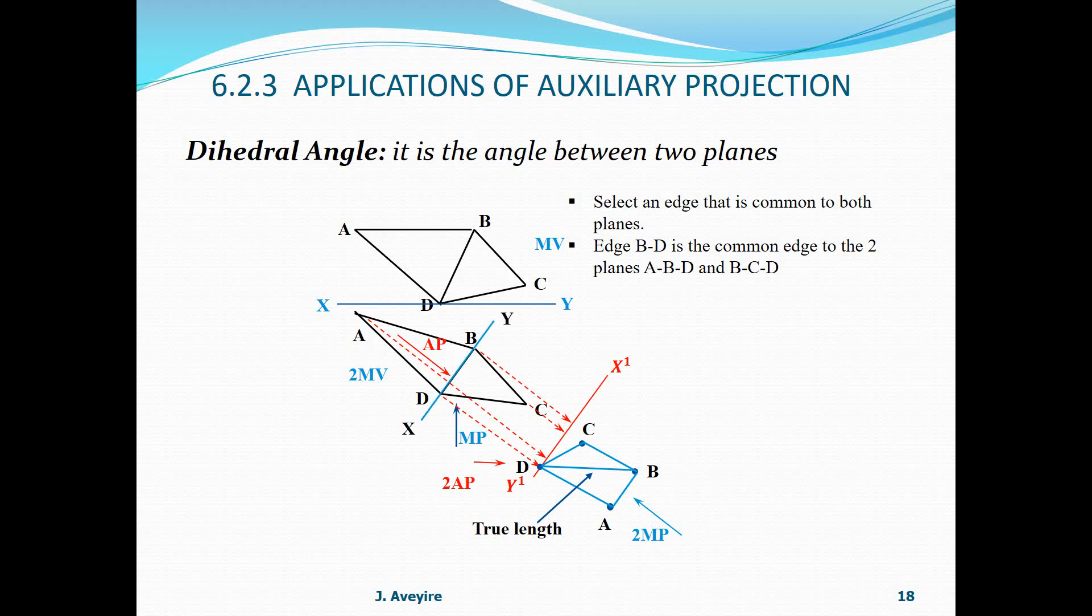Then, we need to introduce our reference plane perpendicular to 2MP. This time, conveniently placed through BD. Therefore, the point B and D has zero distances from XY. But A is positive and C is negative. Then now, draw our line X2Y2 perpendicular to 2AP.